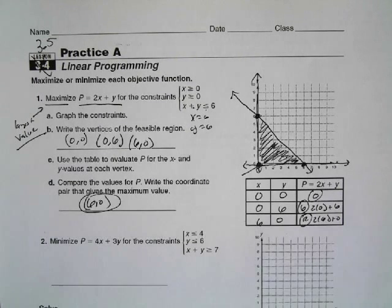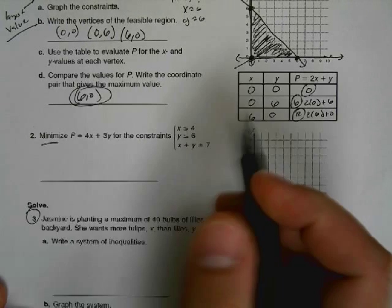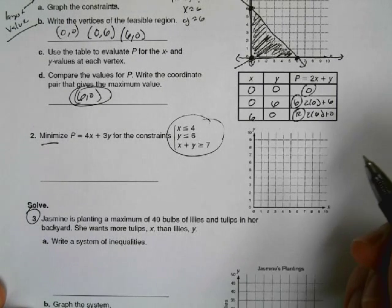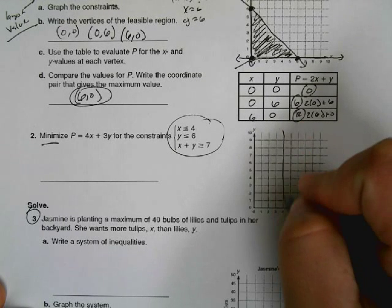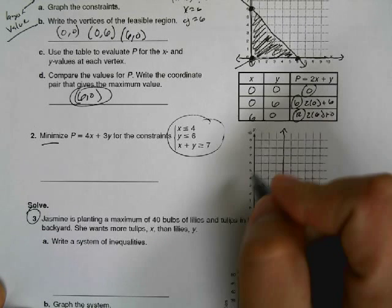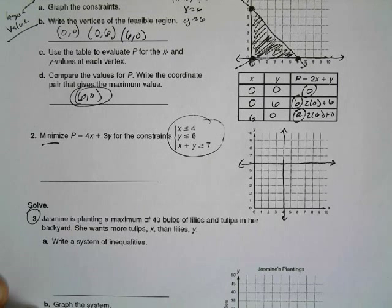So now for this next problem, we're going to go ahead and minimize. So this is the vocab, minimize, maximize. In order to do that, we need to find the corner points. So I'm going to graph these three lines. We have x is less than four. So I'm going to graph the line x is less than four. And then we have a line y is less than or equal to six. So I'm going to go ahead and graph that line.